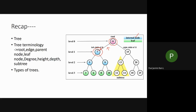An internal node is one that has at least one branch. A leaf node is a node that has no branches and no children. All the green-colored nodes are leaf nodes. In a complete binary tree, if you have n levels, nodes will be filled at all levels, and leaf nodes will be at the maximum level.